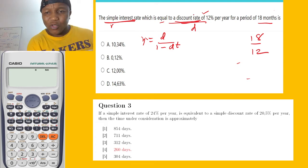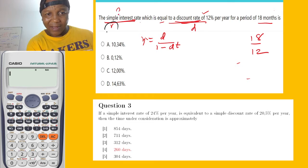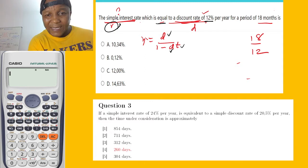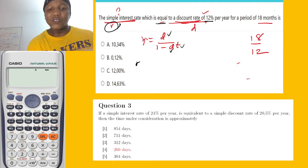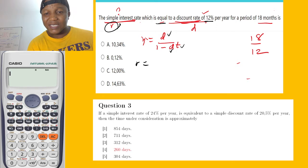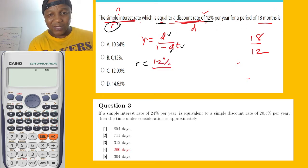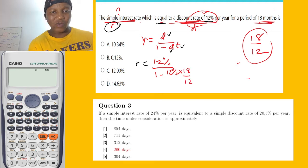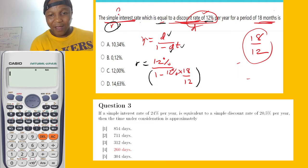So what do we want? They say the simple interest rate. They want the simple interest rate, which is I, equal to the discount rate divided by 1 minus DT. They give us a discount rate of 12% for 18 months. So I equal to 12% over 1 minus, discount rate 12%, multiplied by time 18 over 12.